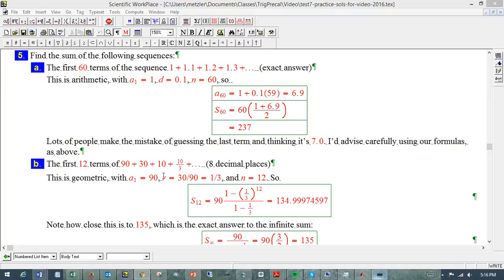All right, continuing with some more examples, here's finding some sums of different kinds of sequences with different given data. Find the sum of the first 60 terms of the sequence 1 plus 1.1 plus 1.2 plus 1.3, and we want an exact answer. So the absolute first key is, is it a known kind of sequence? And in this case, it's arithmetic.